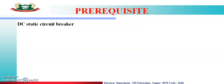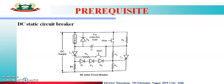In the previous lecture, we studied the DC Static Circuit Breaker. This is the circuit diagram for the DC Static Circuit Breaker. When the start button is pressed, current flows through R4 and through the start path to trigger SCR T1 into conduction.